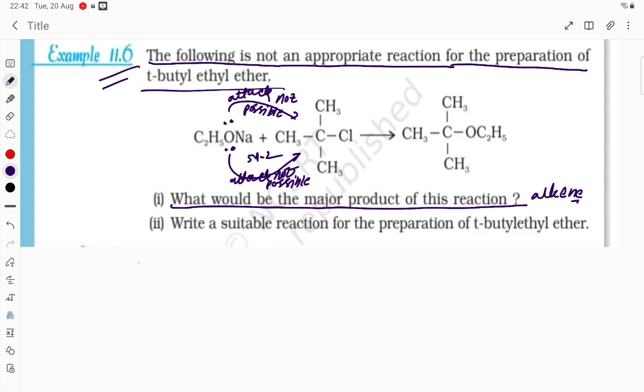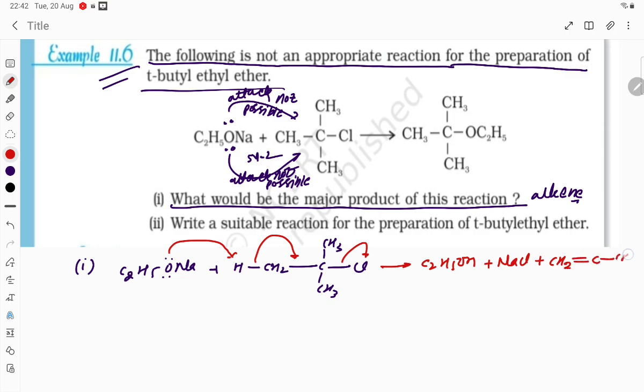How is it going to happen? Let's try to do the first one. C2H5ONa plus here we are writing H-CH2-C with CH3, CH3, and Cl. This lone pair electron is going here, this bond is shifting here, this bond is splitting out. So the products are C2H5OH plus NaCl, and the other major product is CH2=C with CH3 and CH3.